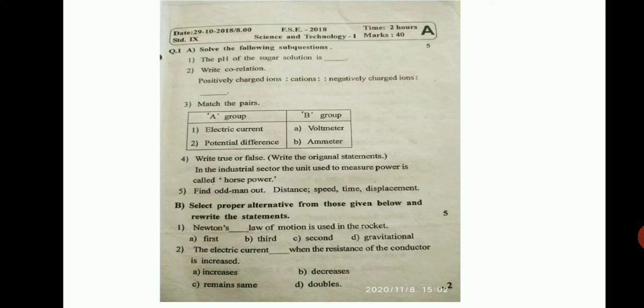Let us move to our next question. Write true or false, write the original statement. Make very sure that write the original statement means what? If it is false, you have to make it true and write. If it is true statement, the same statement you have to write. If you do not write statement, your half mark will be cut. The question here is, in the industrial sectors, the unit used to measure the power is called horsepower.